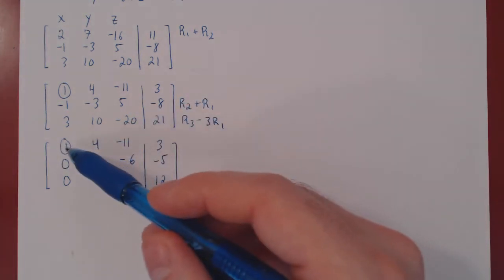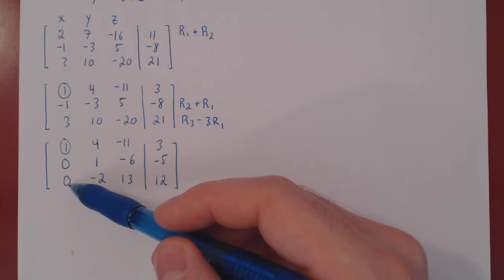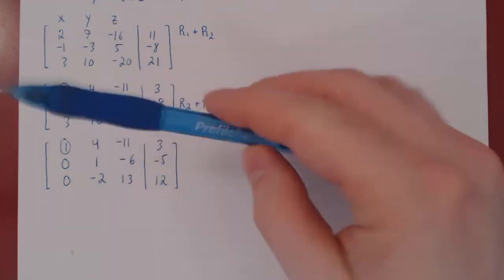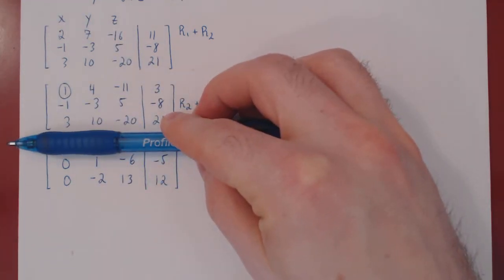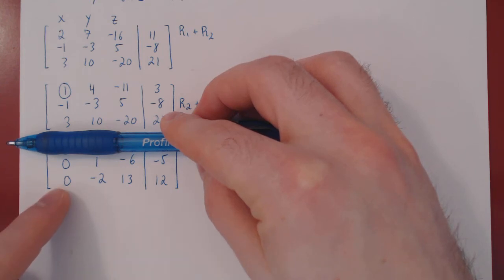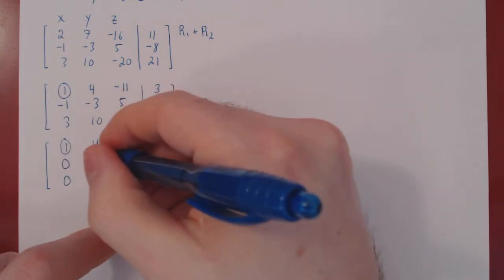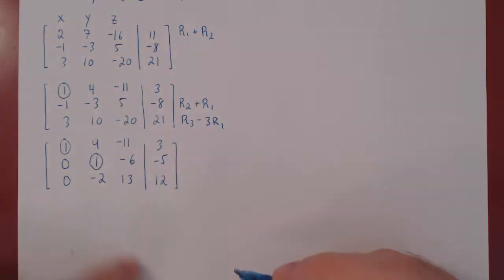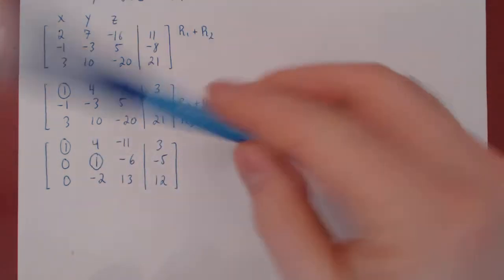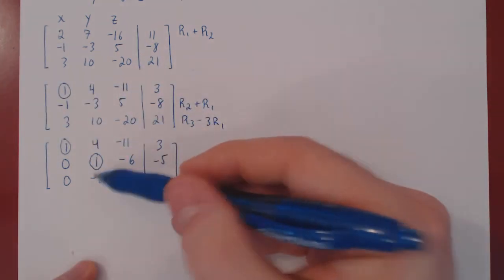And now we have our leading 1 in the top row in the leftmost column. We've killed the entries below, so we ignore this row. And we now repeat. We start with the leftmost column and we try to introduce a leading 1 in the top row. We can't have a leading 1 here, as both are 0s. So we move to the second column from the left. There are two non-zero entries. And the job, as always, is to get a leading 1 in the top row. Well, we get a free leading 1 here.